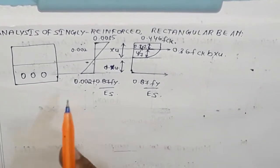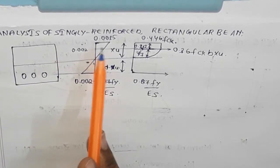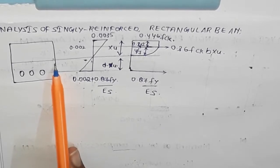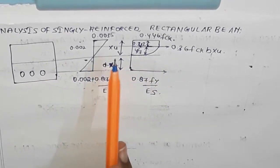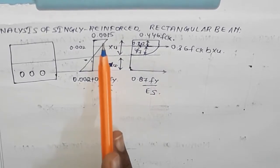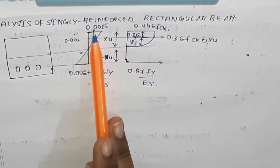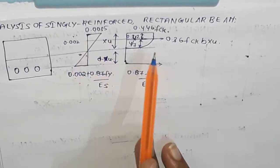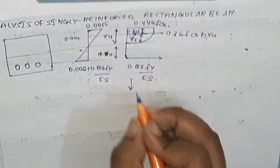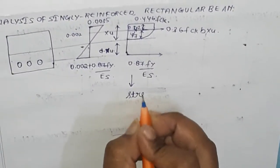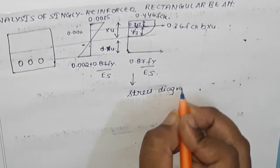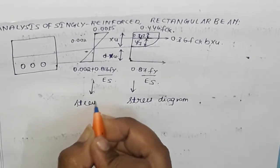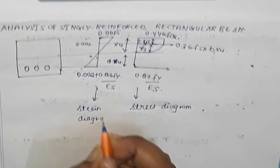Welcome back to our channel. Now let us discuss the analysis of singular reinforced rectangular beam. Previously we have seen the stress-strain for concrete and steel. Based on those values we have written the ultimate stress-strain values for steel and concrete. This is the strain diagram and this is the stress diagram.